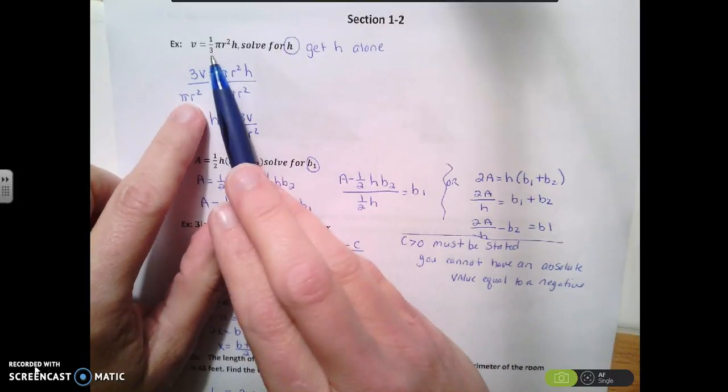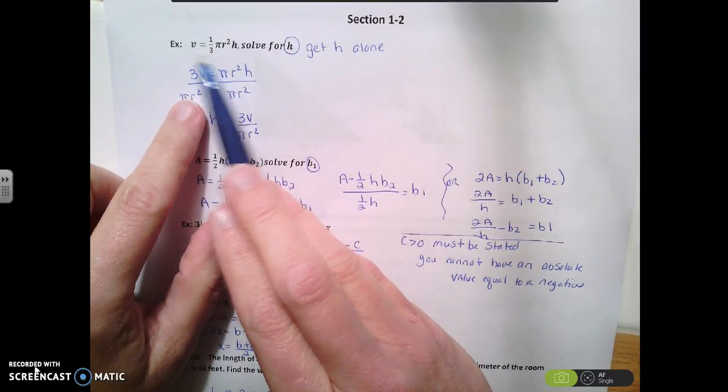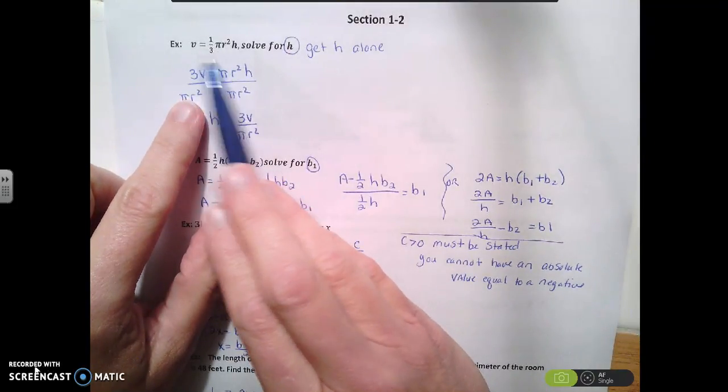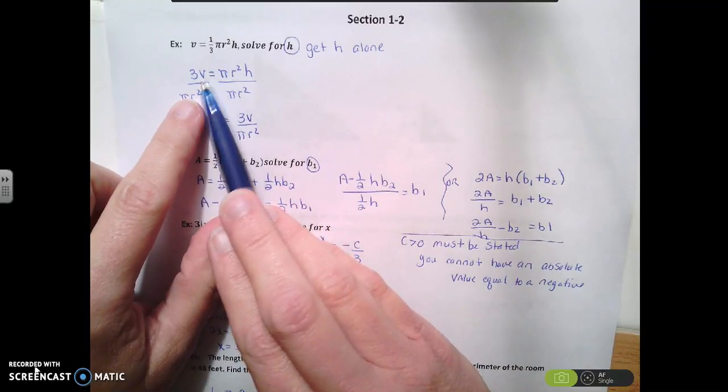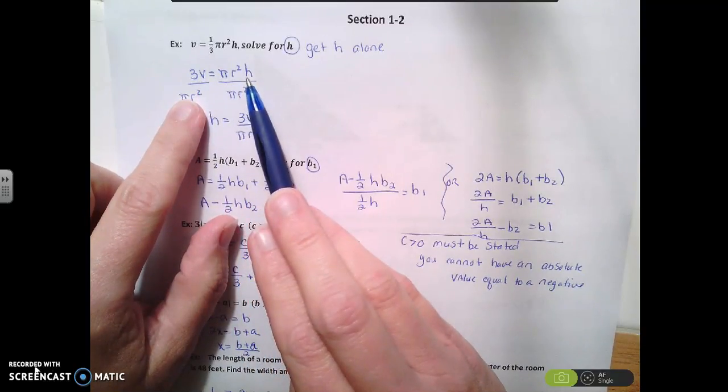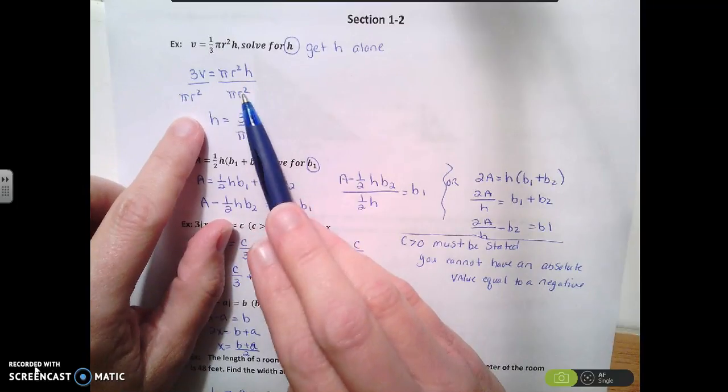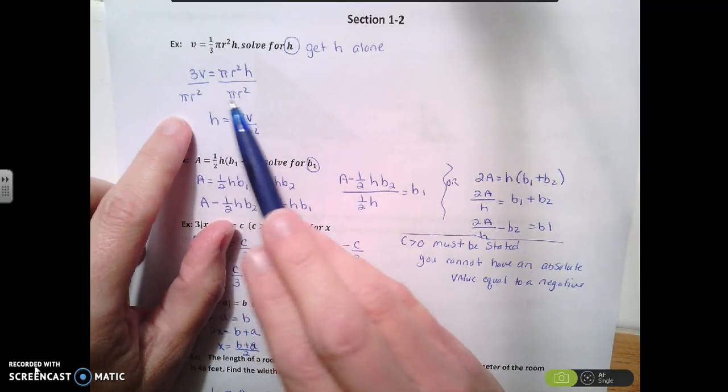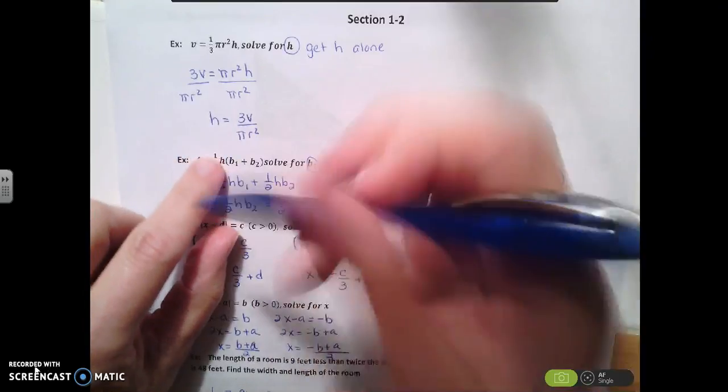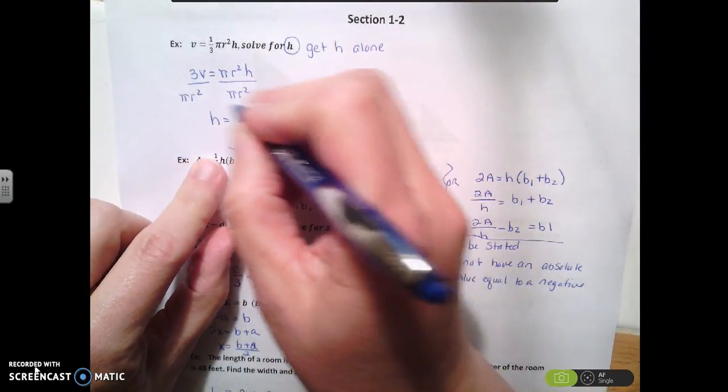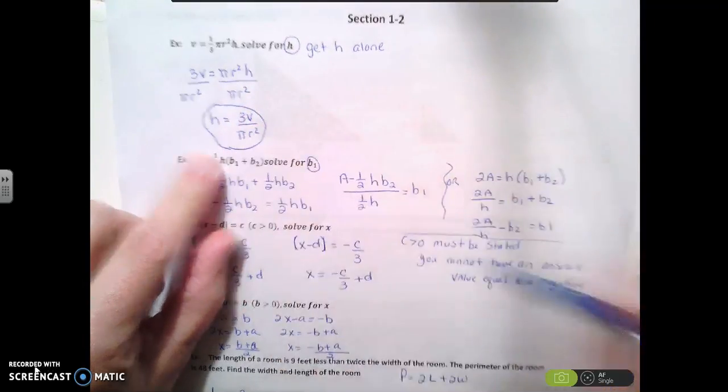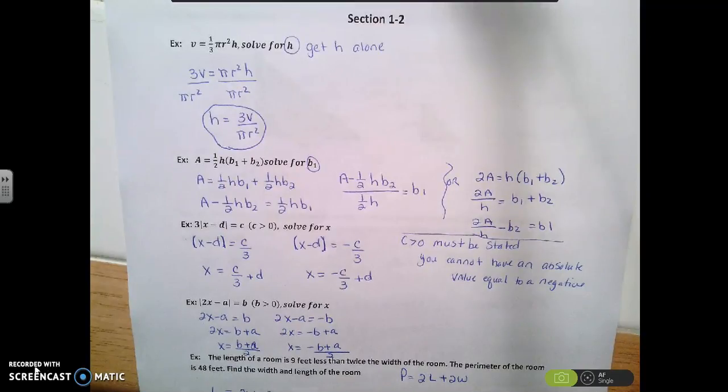So because of this fraction, probably the first thing that I want to do is multiply both sides by 3. So I get 3v, and then I get the pi r squared h. And then to get h by itself, I'm going to divide both sides by pi r squared. So I end up with h equals 3v divided by pi r squared. And that's my solution.